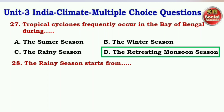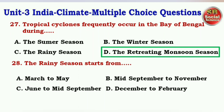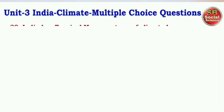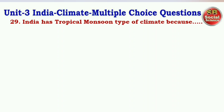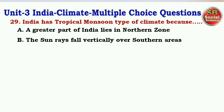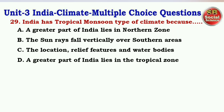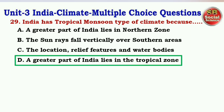Next question: The rainy season starts from — options are March to May, mid-September to November, June to mid-September, December to February. The right answer is option C — June to mid-September. Next question: India has tropical monsoon type of climate because — options are a greater part of India lies in the northern zone, the sun rays fall vertically over southern area, the location, relief features and water bodies, a greater part of India lies in the tropical zone. The right answer is option D — a greater part of India lies in the tropical zone.